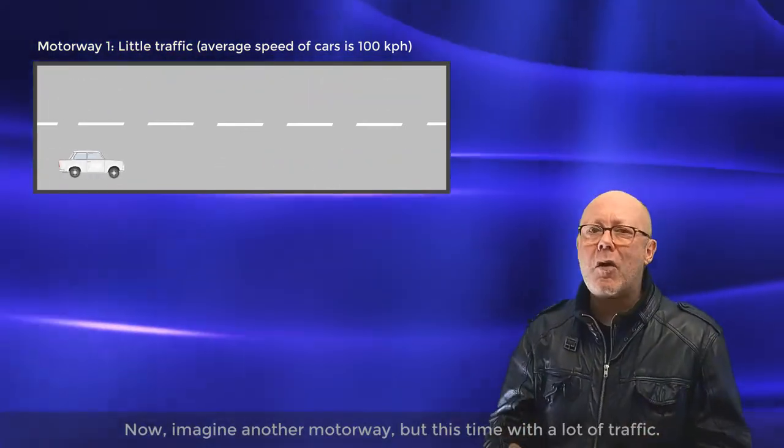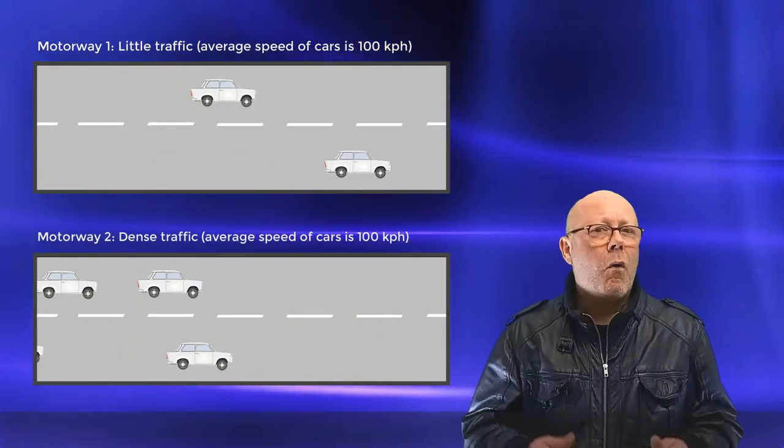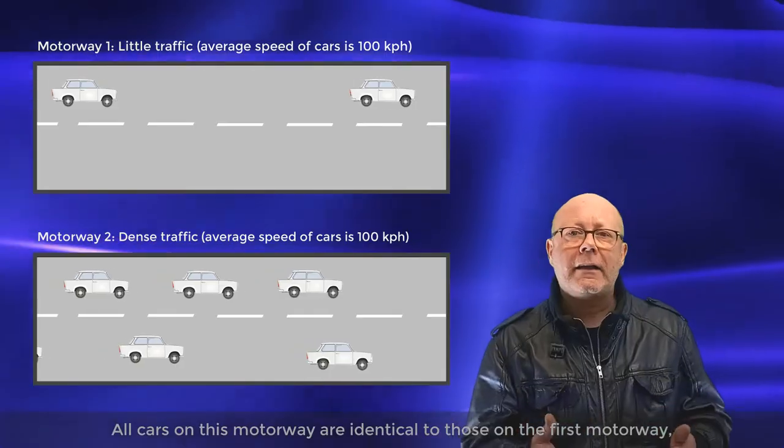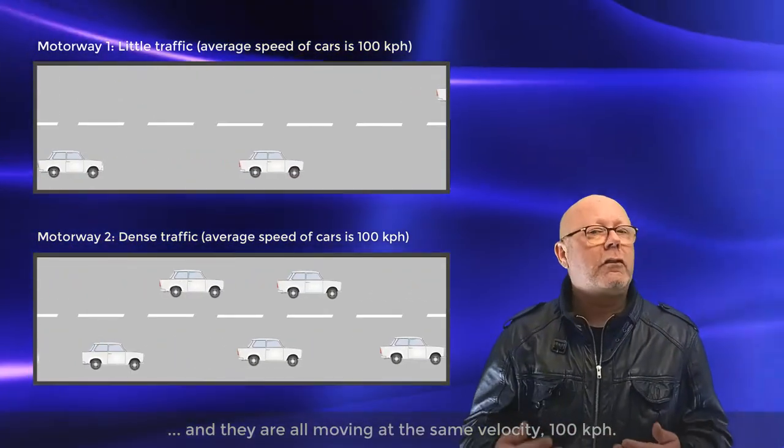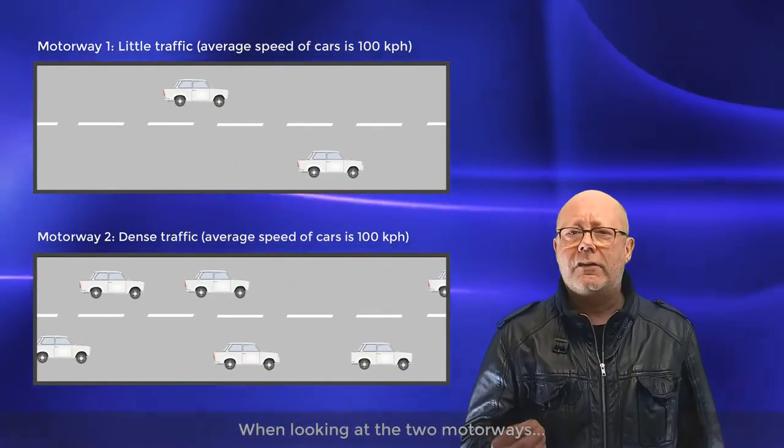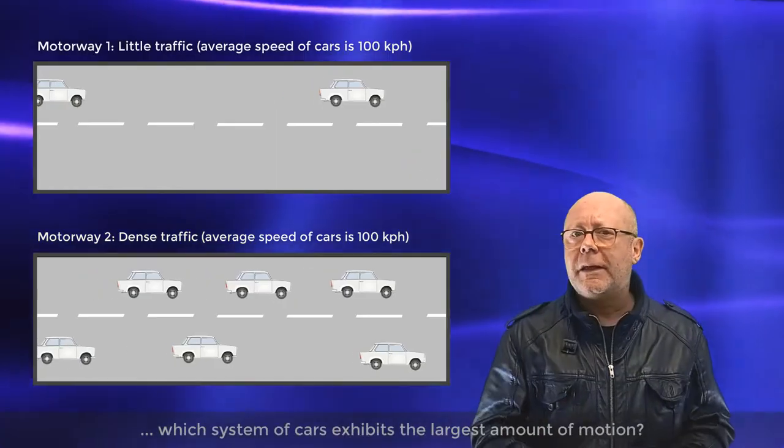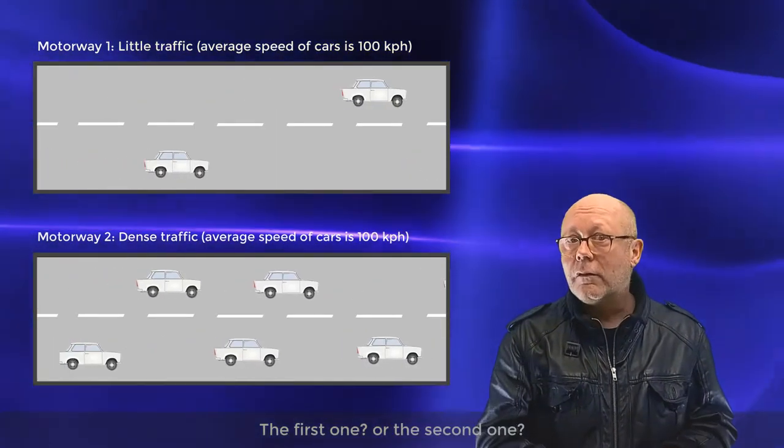Now imagine another motorway, but this time with a lot of traffic. All cars on this motorway are identical to those on the first motorway, and they are all going at the same velocity, 100 kph. When looking at the two motorways, which system of cars exhibits the largest amount of motion? The first one, or the second one?